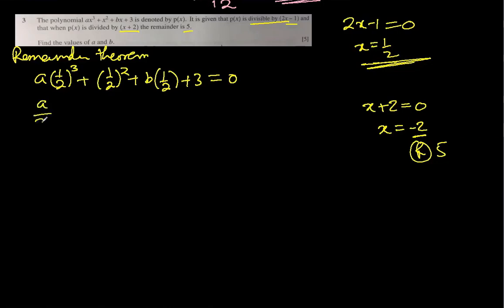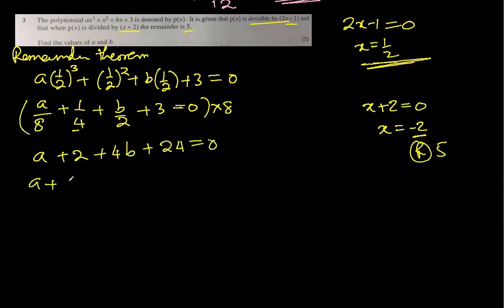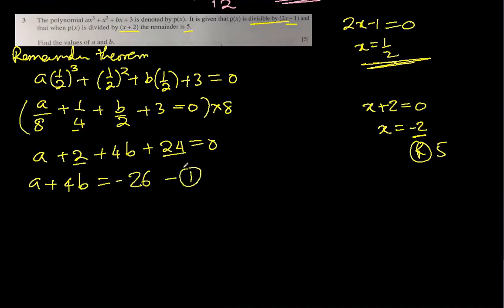So what do we get? a/8 plus 1/4 plus b/2 plus 3 is 0. Let's get rid of the denominators by multiplying by 8 because 8 is the LCM. So what do we get? 8 will cancel out, so a, 1/4 multiplied by 8 is 2, b times 8 will be 4b, then 24 equal to 0. So we get an equation a plus 4b equal to minus 26. This is equation number 1.